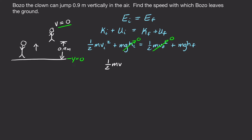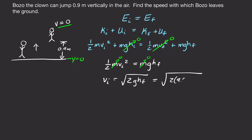We have one-half mv initial squared equals mgh final height. We have an m on both sides, so our mass is going to cancel. If we solve for our initial velocity, we multiply by two on both sides and then take a square root. So we take the square root of two times 9.8 meters per second squared times the height of 0.9 meters, and we get 4.2 meters per second.